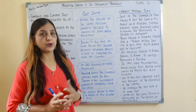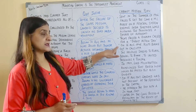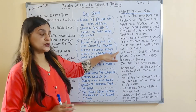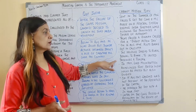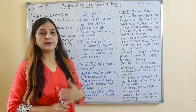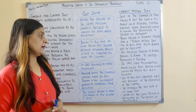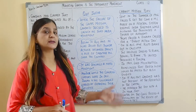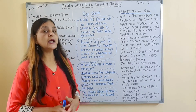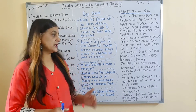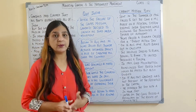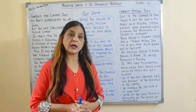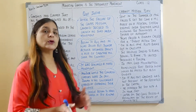Jinnah called for a Direct Action Day on 16th August 1946. Riots broke out in Calcutta, and this violence spread to rural Bengal, Bihar, the United Provinces, and the Punjab. In 1947, Lord Mountbatten announced that British India would be freed but also divided. When this whole situation developed, Mountbatten announced independence, and with it came the partition of the country — India was divided into two parts.